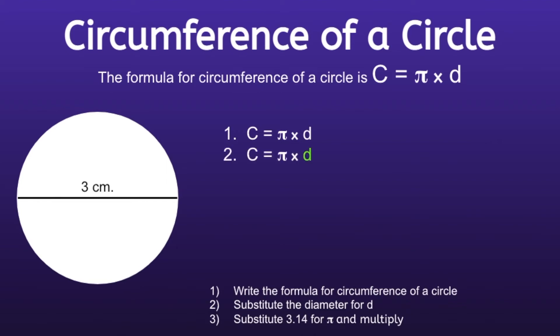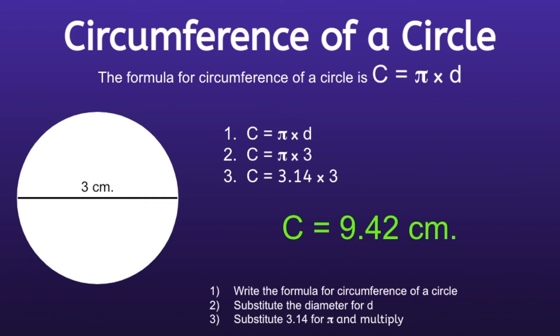Step 2 is to substitute the diameter for d. If we look at this circle, we can see that the diameter is 3, so we replace d with 3. Step 3: substitute 3.14 for pi and multiply. So 3.14 times 3 equals 9.42. The circumference of this circle is 9.42 centimeters.